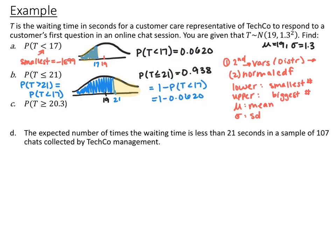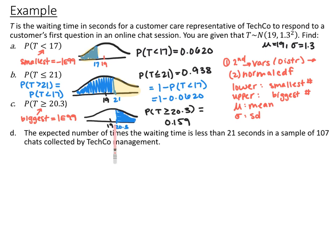Symmetry on normal curves is very useful. For part C, find the probability that T is greater than or equal to 20.3. Note that since you want it to go to positive infinity, type 1E99 as the upper bound. Drawing the picture, the mean is at 19 and I shade everything greater than 20.3. Lower bound is 20.3, upper bound is 1E99, mean is 19, standard deviation is 1.3. The result is 0.159.